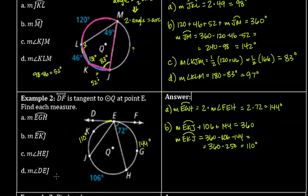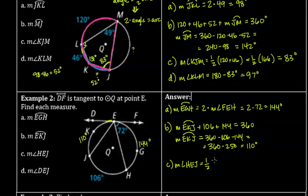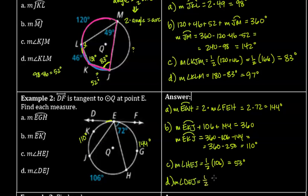The next question asks for angle HEJ. Since it's an inscribed angle with its vertex on the circle, it equals half the arc it intercepts, which is the 106° arc. So angle HEJ = 106 ÷ 2 = 53 degrees. And angle DEJ also has its vertex on the circle, intercepting the 110° arc, so angle DEJ = 110 ÷ 2 = 55 degrees.